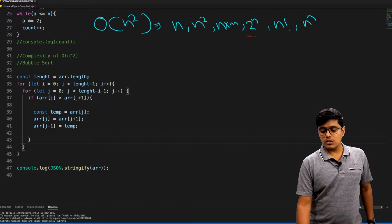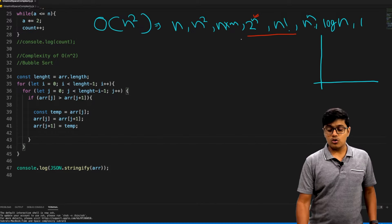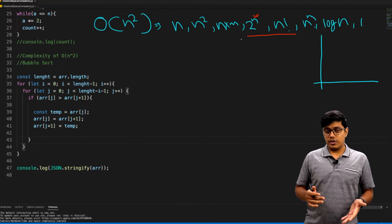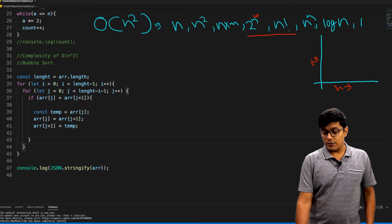Here we're going to discuss 2 to the power n and n factorial. 2 to the power n is also known as exponential. If you increase the number of inputs, if n is increasing, it will increase exponentially.